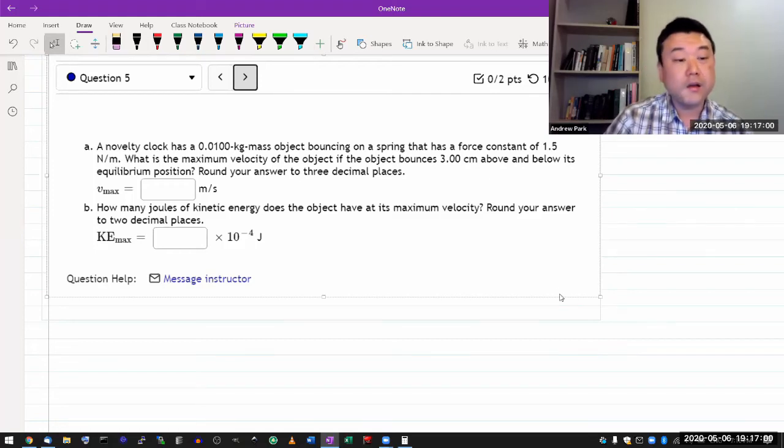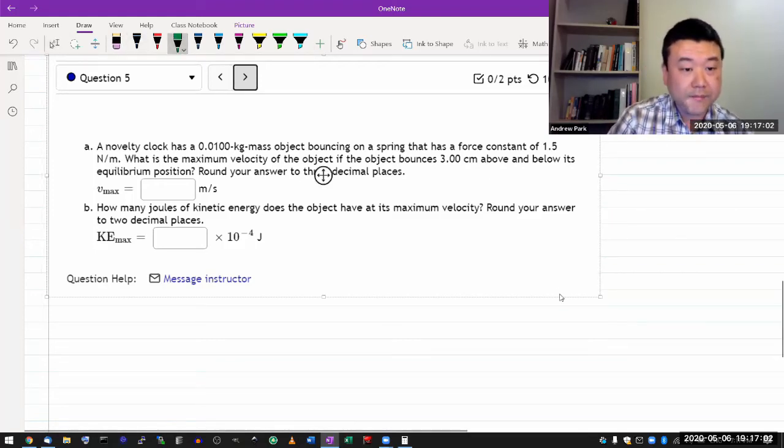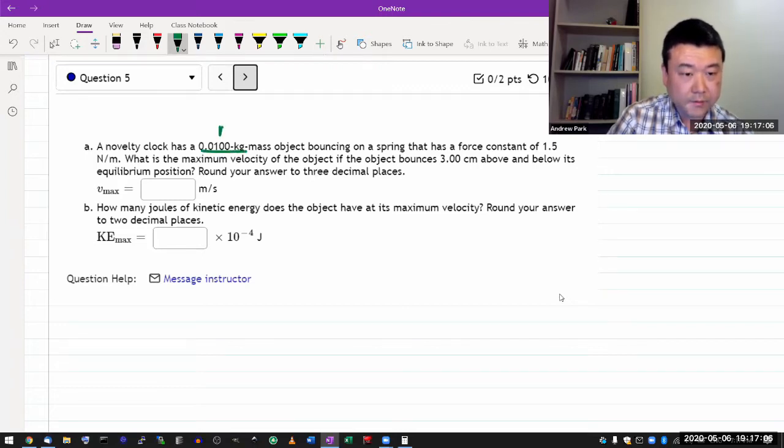So it says a novelty clock has a mass - let me give it a label - some mass object bouncing on a spring. Here's the spring constant, 1.5 newton per meter.